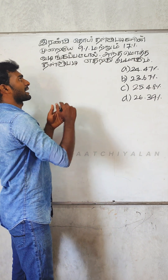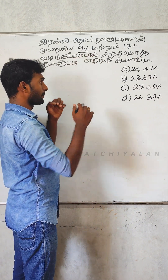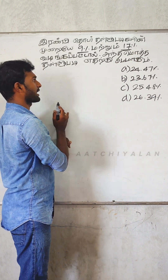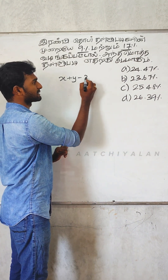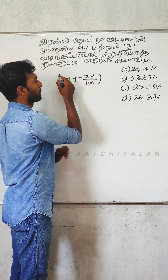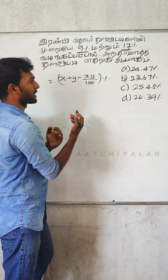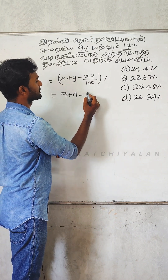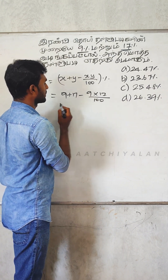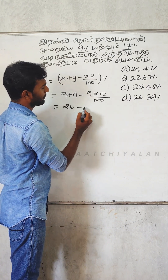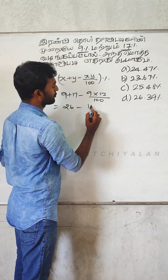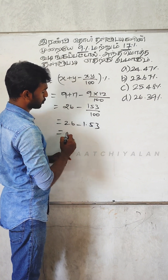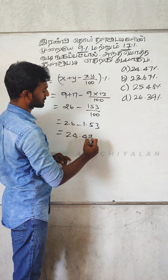First, you have a 9% discount. If you divide, you have a 17% discount, then you will find the number of people. What is this formula? x plus y minus xy by 100. Percentage is one of the formulas. 9 plus 17 minus 9 into 17 by 100. 9 plus 17 is 26 minus 153 by 100. 26 minus 1.53 — so the answer is 24.47%.